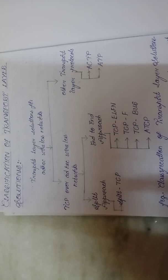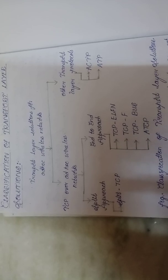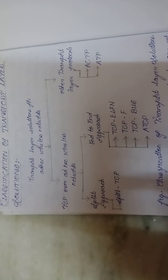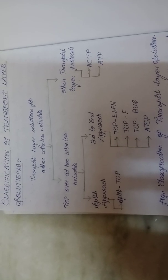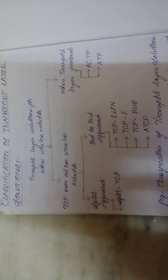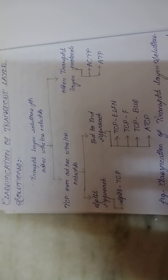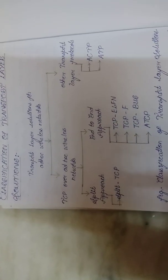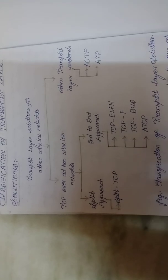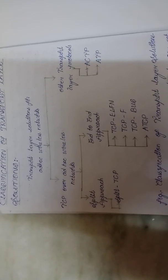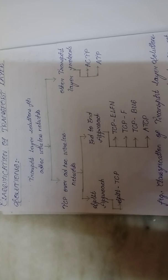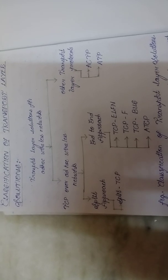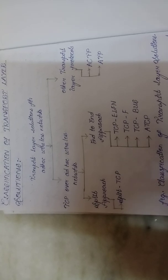In TCP over ad-hoc wireless networks, we have two approaches. One is the split approach, with a sub-classification called Split TCP. In the end-to-end approach, we have four sub-classifications. The first is TCP ELFN — TCP with Explicit Link Failure Notification.